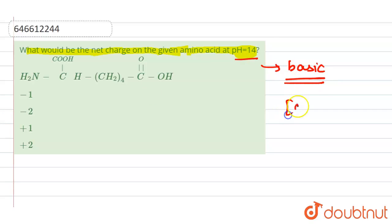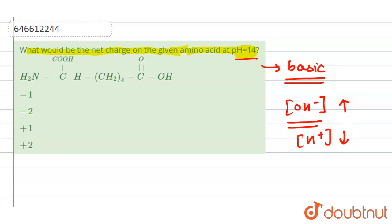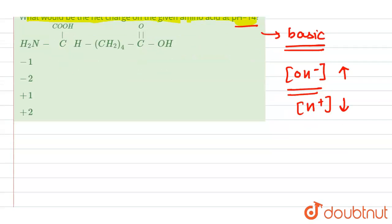In a basic solution, the OH⁻ ion concentration is increasing and the H⁺ ion concentration is decreasing — that is why we have pH equal to 14. When H⁺ ion concentration increases, the pH value is less, meaning the solution is acidic. Here, our solution is basic.